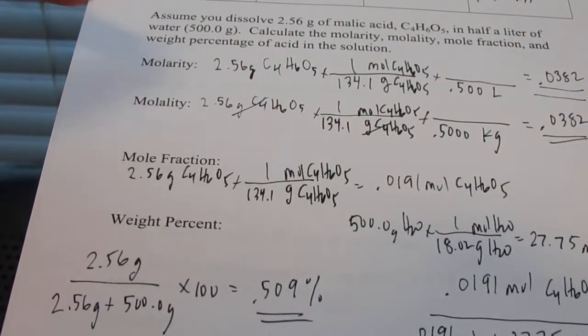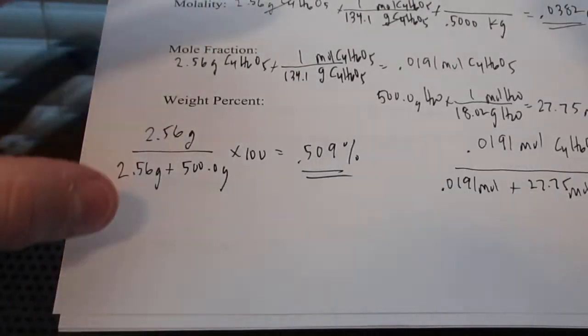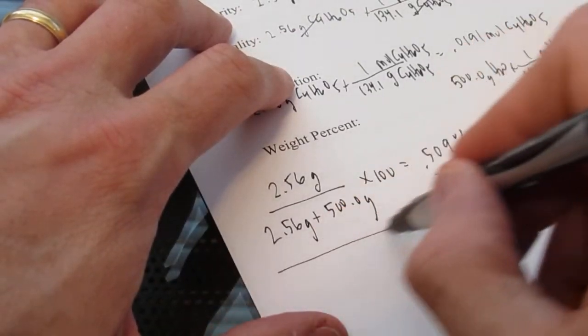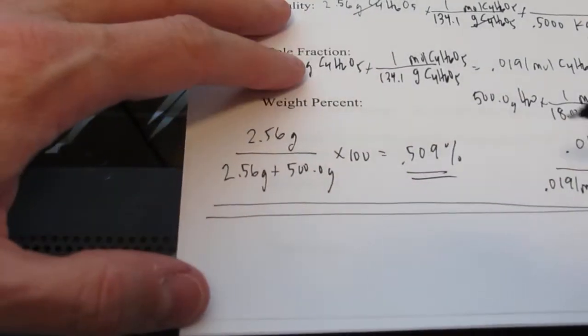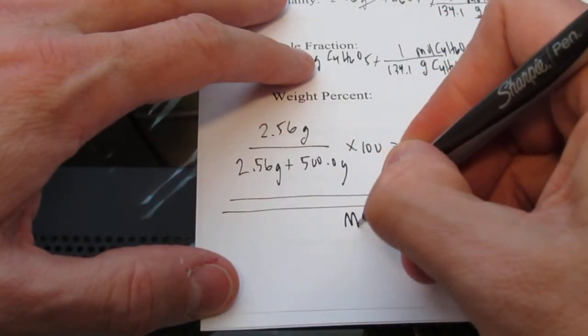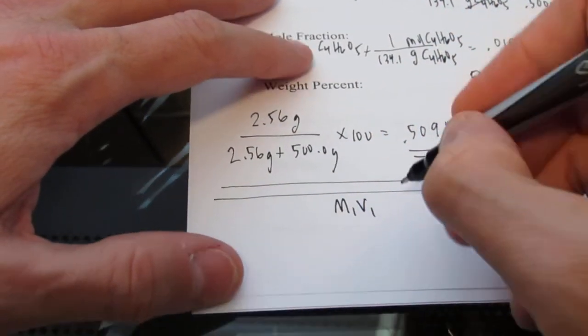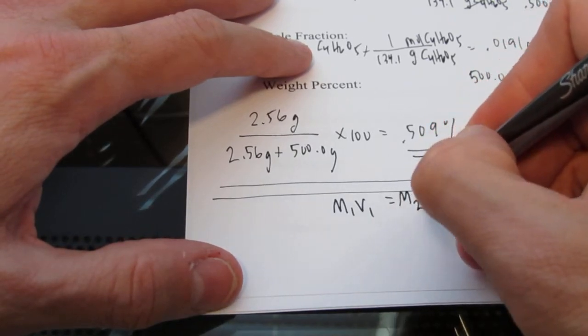Make sure you guys can do those calculations. There are other examples in your notes that you guys need to take time to do. Now, there's one more thing I want to bring up that we didn't review on this particular worksheet. And that is dilution. Remember your magic rule of dilution. M1 V1 equals M2 V2.